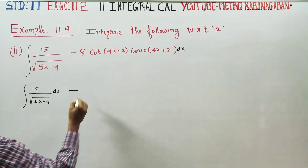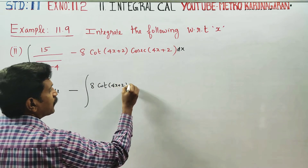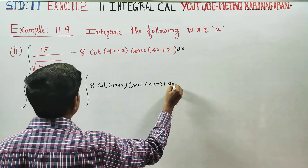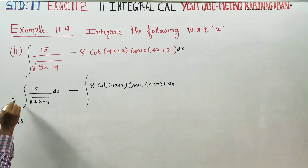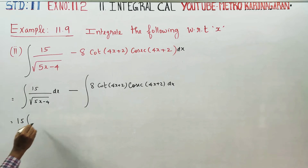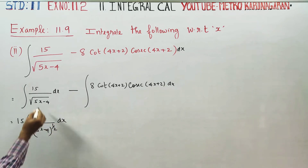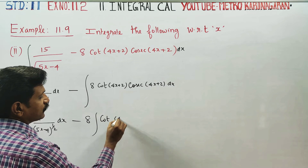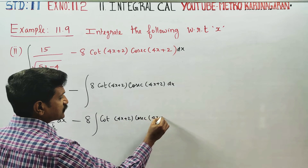This is minus integration of 8 cot(4x + 2) cosecant(4x + 2) dx. It is easier to integrate 1 by root of (5x minus 4), which is power half. Minus 8 cot(4x + 2) cosecant(4x + 2) dx.